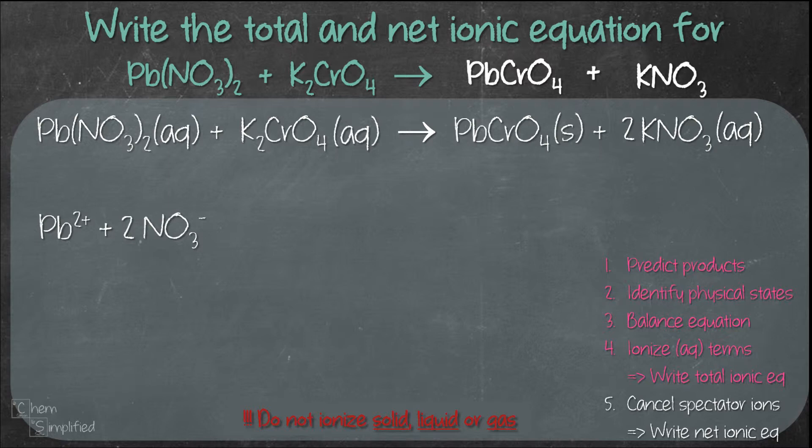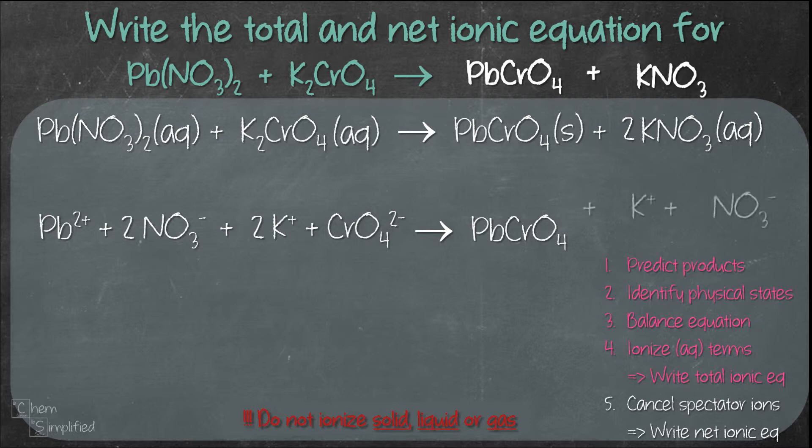Moving on to our second term, K₂CrO₄, it will split to give us 2K⁺ and CrO₄²⁻. Since PbCrO₄ is a solid, we leave it as is and don't ionize it. Our final term, 2KNO₃, is going to split to give us 2K⁺ and 2NO₃⁻. Because of that 2 in front of KNO₃, we write 2 for both K⁺ and NO₃⁻ as well. Make sure you don't leave out that 2.